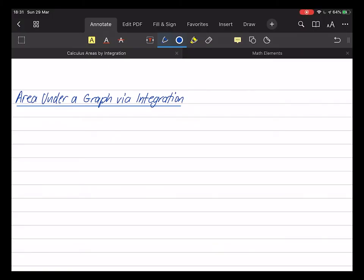Area under a graph via integration. Integration, of course, has many uses. Finding the area under a graph is just one of them. Many people mistakenly use or quote area under the graph as the definition of integration, but integration probably has an infinite number of uses.